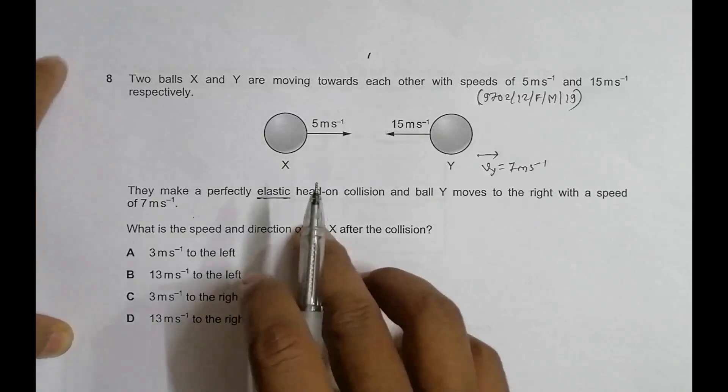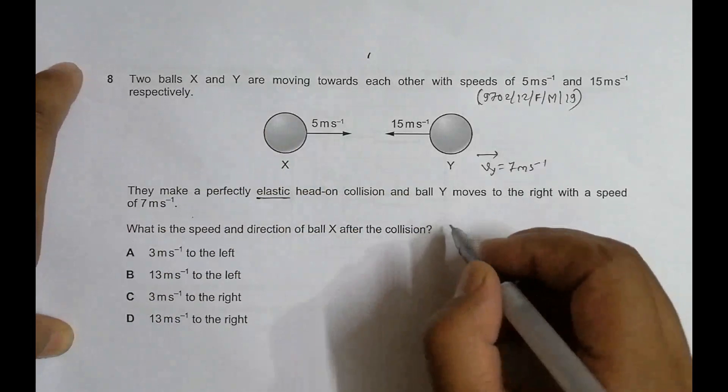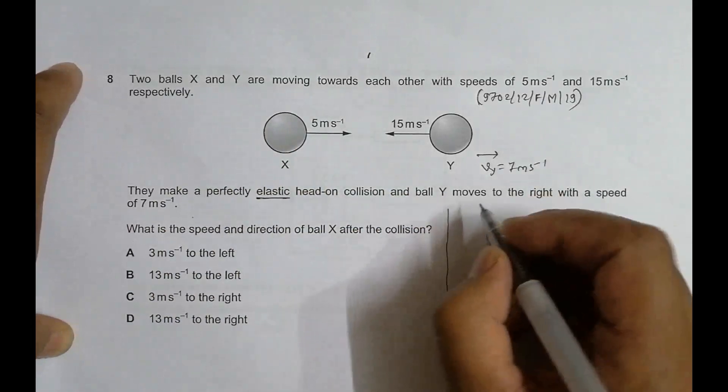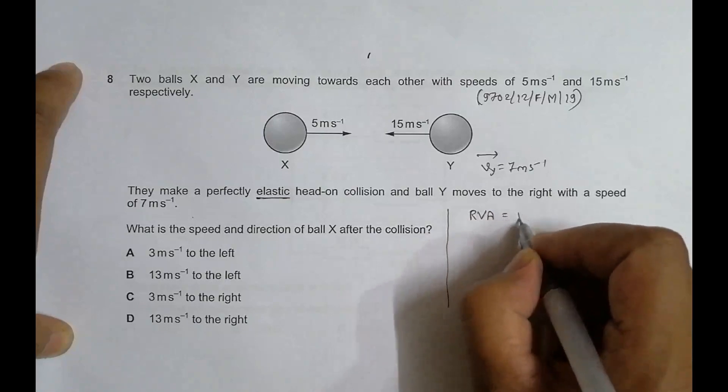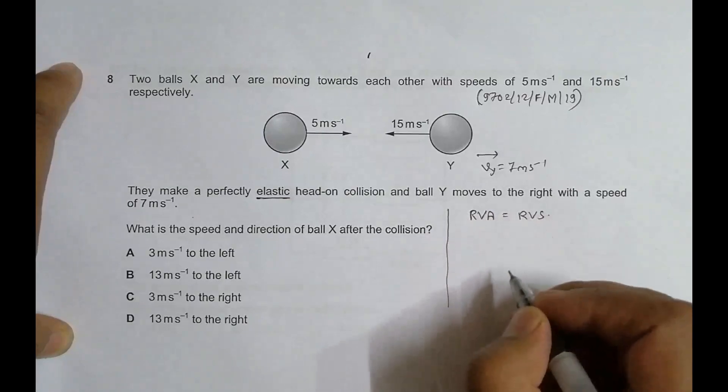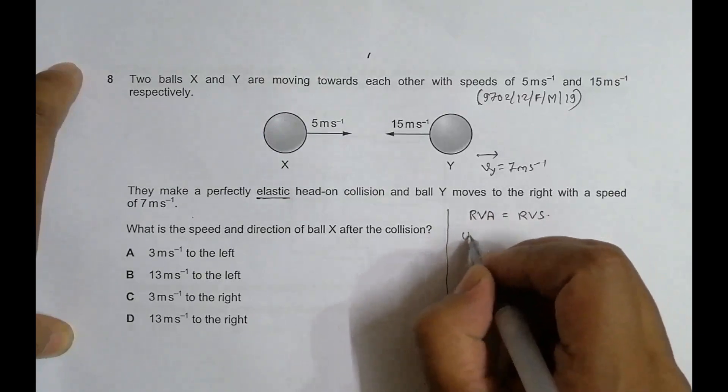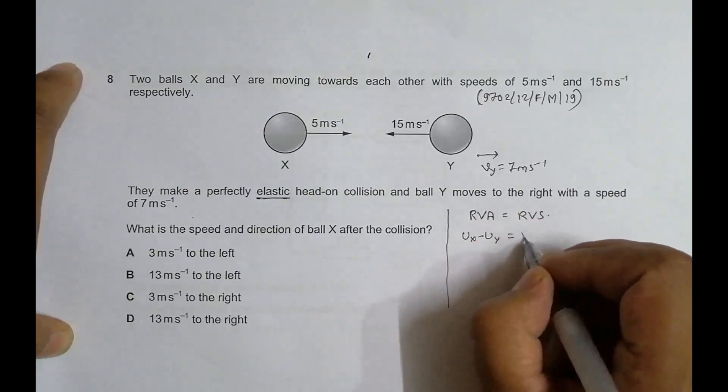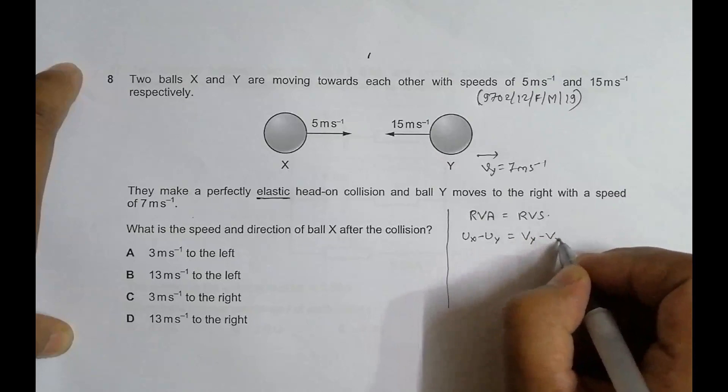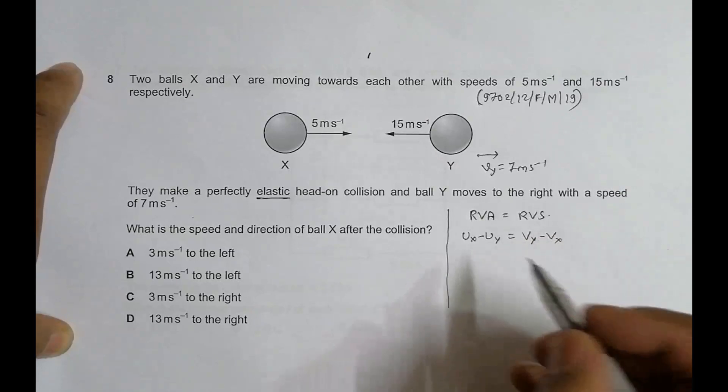One thing to remember in elastic collisions is that the relative velocity of approach is always equal to the relative velocity of separation. This means u_x minus u_y equals v_y minus v_x.